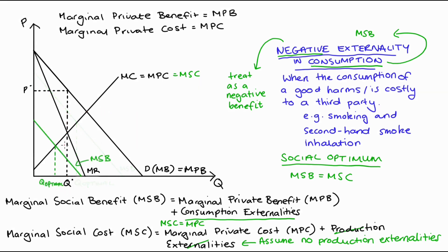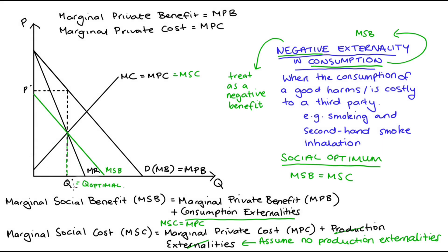However, with a more severe negative consumption externality, the social optimum would shift so that Q-optimal is less than Q-star — less than the monopoly output — and deadweight loss arises because for units between Q-optimal and Q-star, marginal social cost exceeds marginal social benefit but the monopolist still produced them. Lastly, we could get a case where Q-star equals Q-optimal, meaning no deadweight loss — the monopolist would be producing at the social optimum.